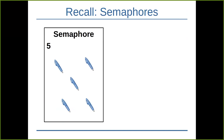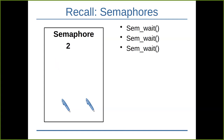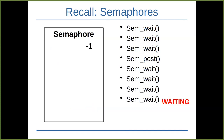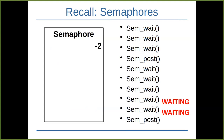Just to remind you about semaphores: recall the paradigm with, say, five pans. If the initial semaphore value is five, we have five pans. Each time we call sem_wait we take one pan. Once all pans are taken, the next sem_wait will block. Another thread that calls sem_wait will also block. Eventually when someone calls sem_post, one thread wakes up and the semaphore value is incremented.